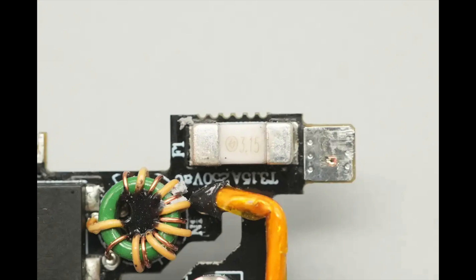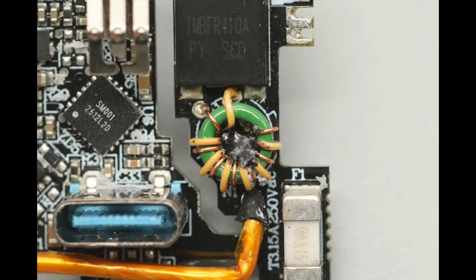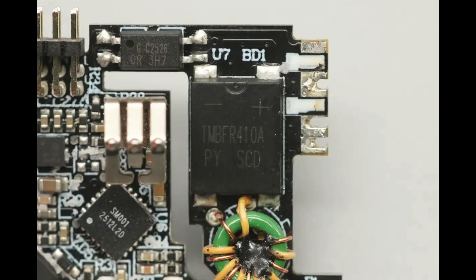The SMD fuse is from BetterFuse, rated at 3.15 amps. The common mode choke is a dual-wire winding used to suppress EMI interference. The bridge rectifier is from Pingwei, model TMBFR410A, rated at 1,000 volts 4 amps, and uses a TMBF package.